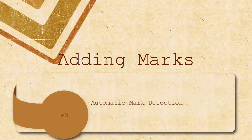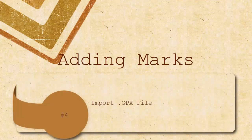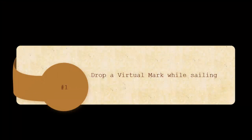The first and second methods are designed for buoy racing using temporary marks. With that in mind, all dropped and automatically generated marks expire and disappear at midnight local time. You can also choose to upload permanent marks in two different ways: either using the race cues mark upload where you export marks from a replay, or a GPX file upload, which is for people familiar with GPX files.